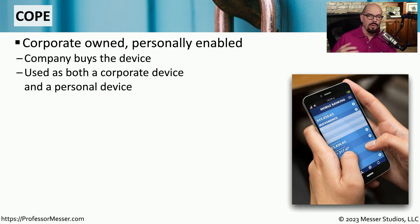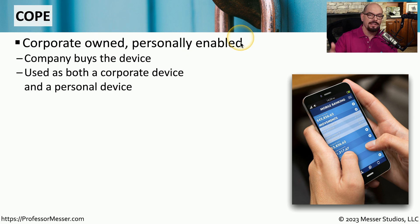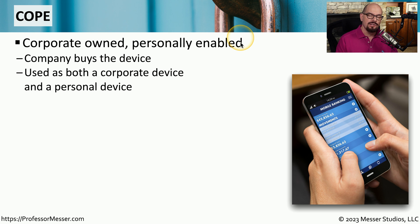Not all organizations require their users to bring in their personal phones. Some organizations rely on COPE, which stands for Corporate Owned, Personally Enabled. This means that the company is purchasing the mobile device and assigning it to employees in their organization. This COPE device could exclusively be reserved for corporate use, but many organizations will also enable those devices to be used not only as a corporate mobile device, but also for personal use.